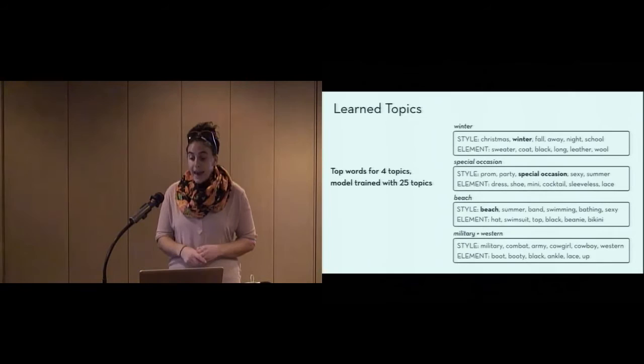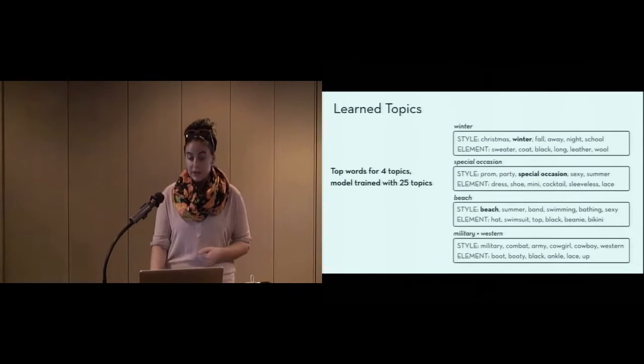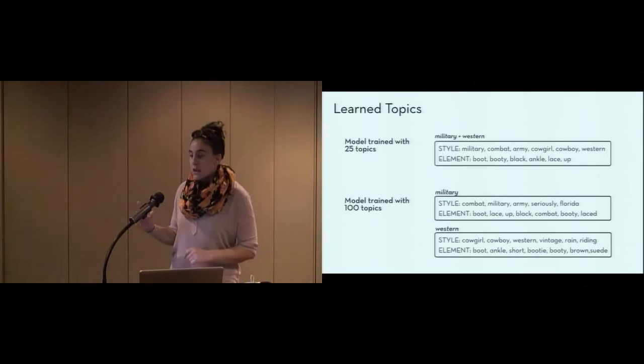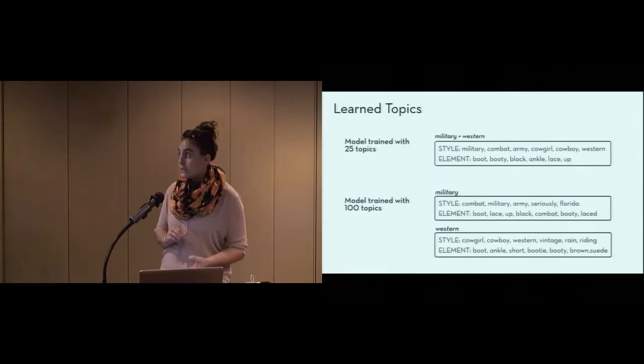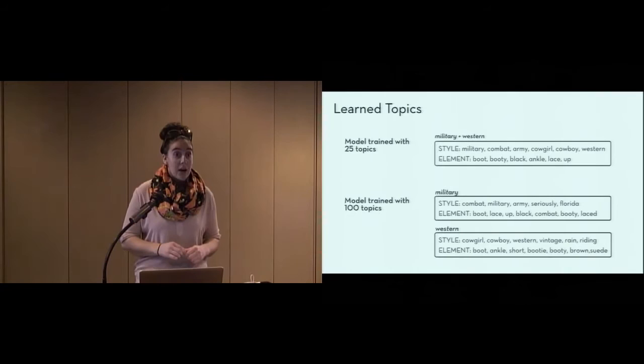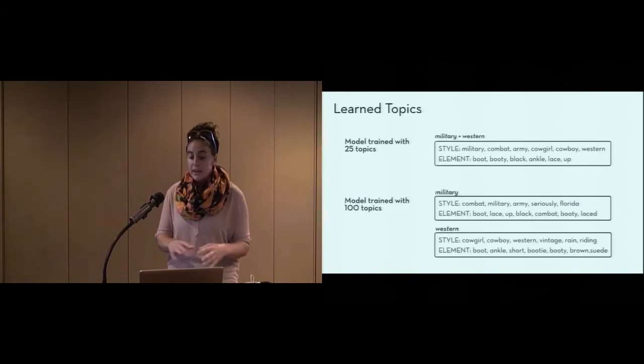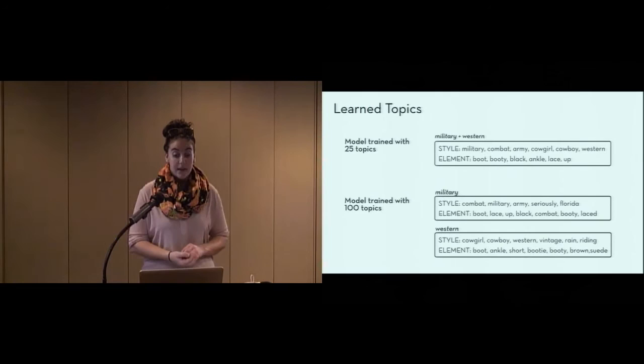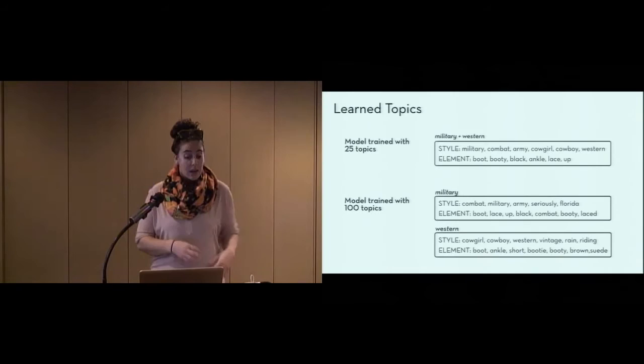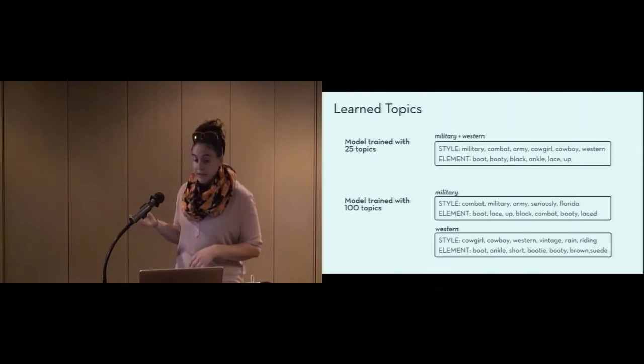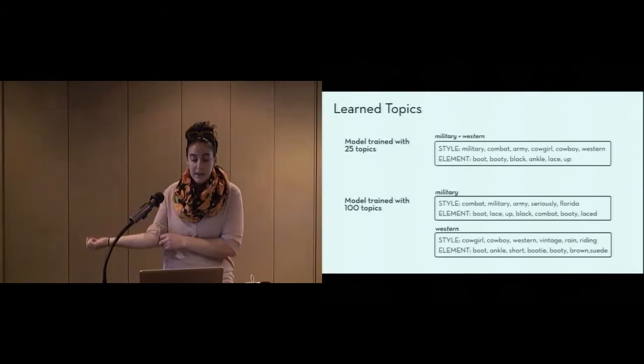So, if we consider the model that's trained with 25 topics, the topic is quite coherent, with element words like boot, ankle booty, and lace-up. But the style words mention both military, with combat and army, and western, with cowgirl and cowboy concepts. If we instead train the model with 100 topics, these concepts break into separate topics, with one for military concepts, and a separate one for western concepts. And we begin to see distinctions, like the idea that black lace-up boots are used in combat, whereas brown suede boots are used in western outfits. However, as the military topic here shows, the topic coherence decreases. So, if you look at the fourth and fifth words in this topic, they're seriously in Florida, which are clearly less related to this concept.